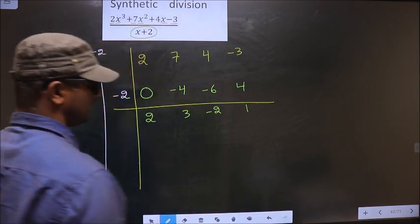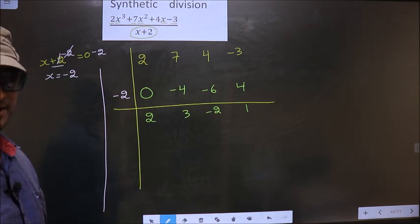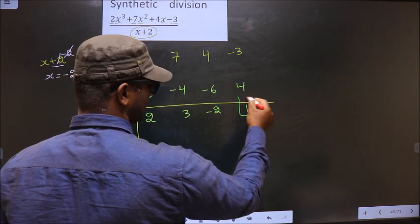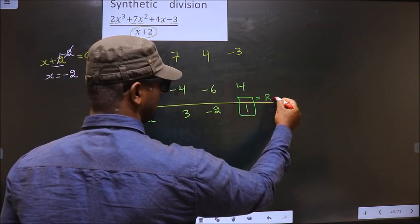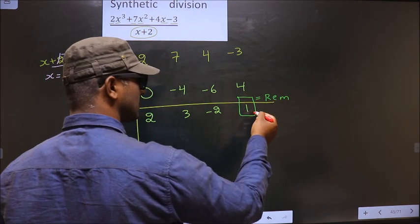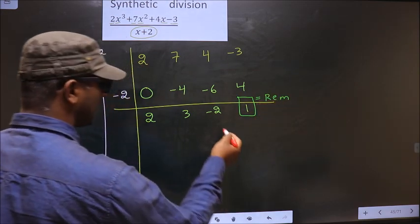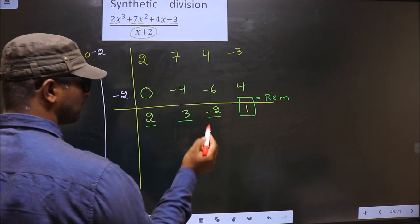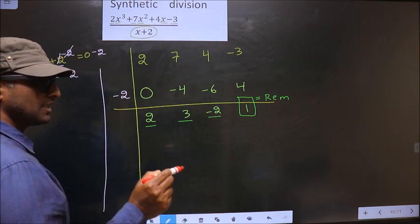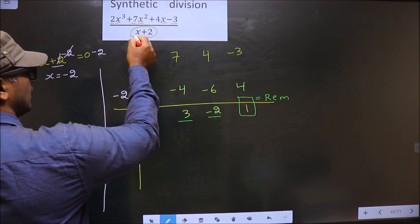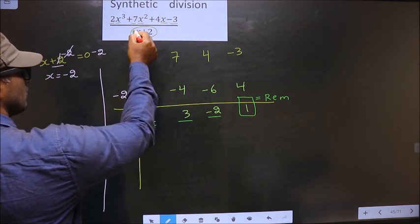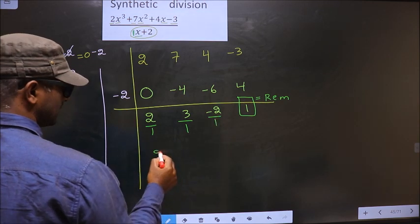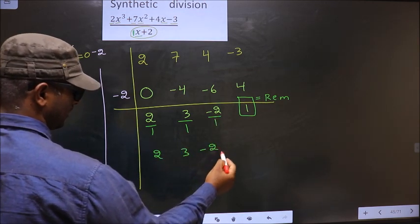1. Okay. Now once you have done till here, then the last number will be your reminder always. Last number will be your reminder. And before numbers, you should divide by the x coefficient present in the denominator. So in the denominator, x coefficient is 1. So you divide by 1. We get same numbers. Okay.